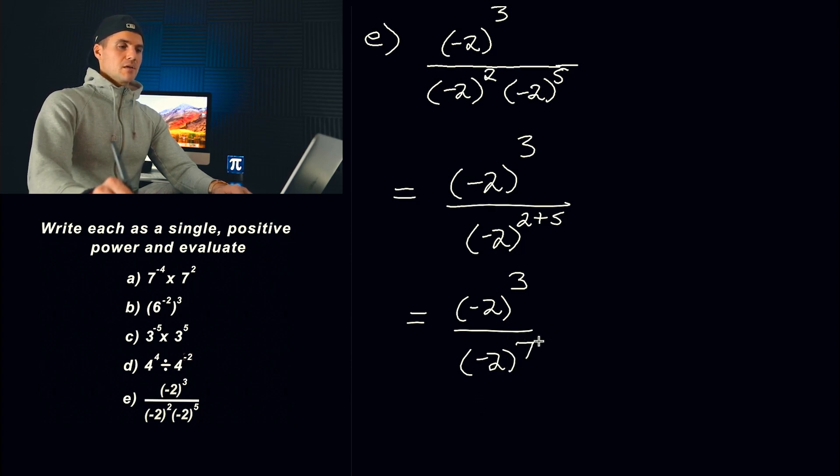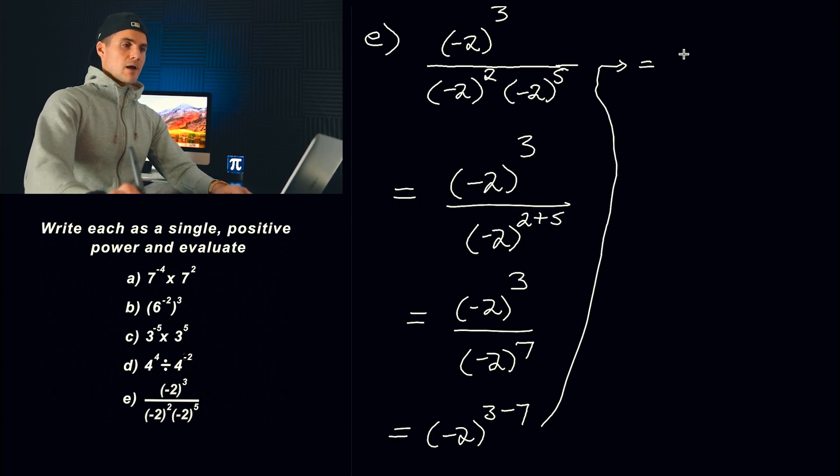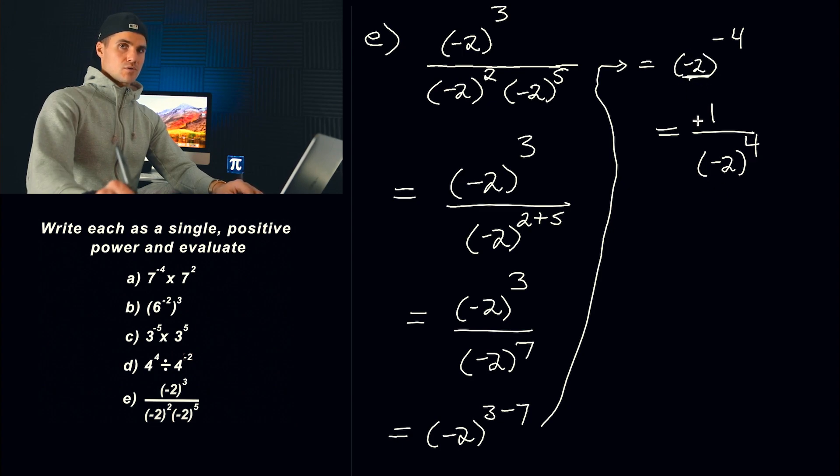Now, what's going to happen here is we're dividing two exponential expressions with the same base. So we could rewrite this as, let's actually just write it over here. So we got (-2)^(3-7), which would basically end up being (-2)^(-4). And then this is a negative exponent. Let's bring that down to the denominator and make it a positive. This negative does not change. The base does not change when you bring it down. So notice it's still negative. Only the exponent changes to a positive.